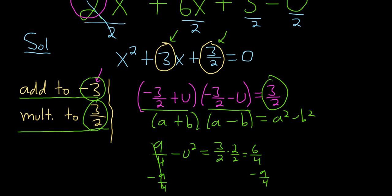So this is going to be, come over here. This is negative u squared equals, and then 6 fourths minus 9 fourths is negative 3 fourths. Multiply by negative 1, so you get u squared equals 3 fourths.